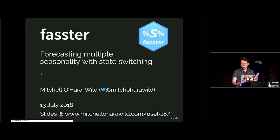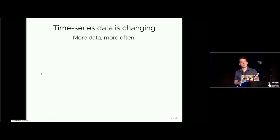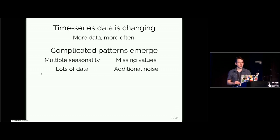So let's see why we need it. It's because time series data is challenging. It's changing and we're getting more data and it's representing itself more often. We're having more sensors that are collecting data at regular intervals and this presents a few problems because the patterns that we observe in these time series change. We have multiple seasonality as you observe time more regularly. We have missing values and noise.